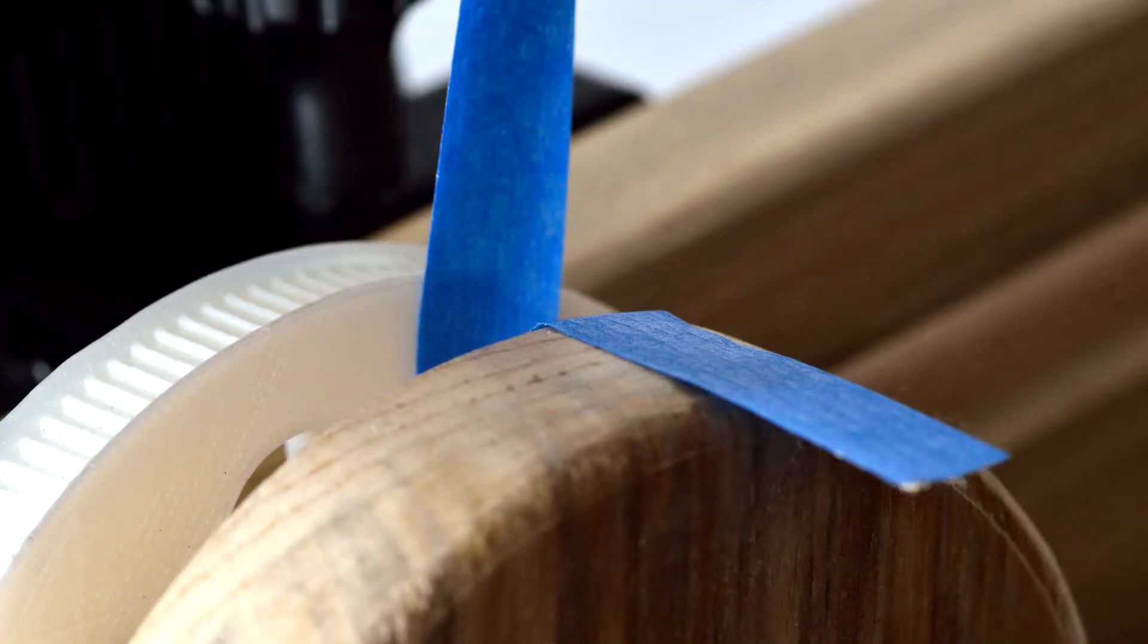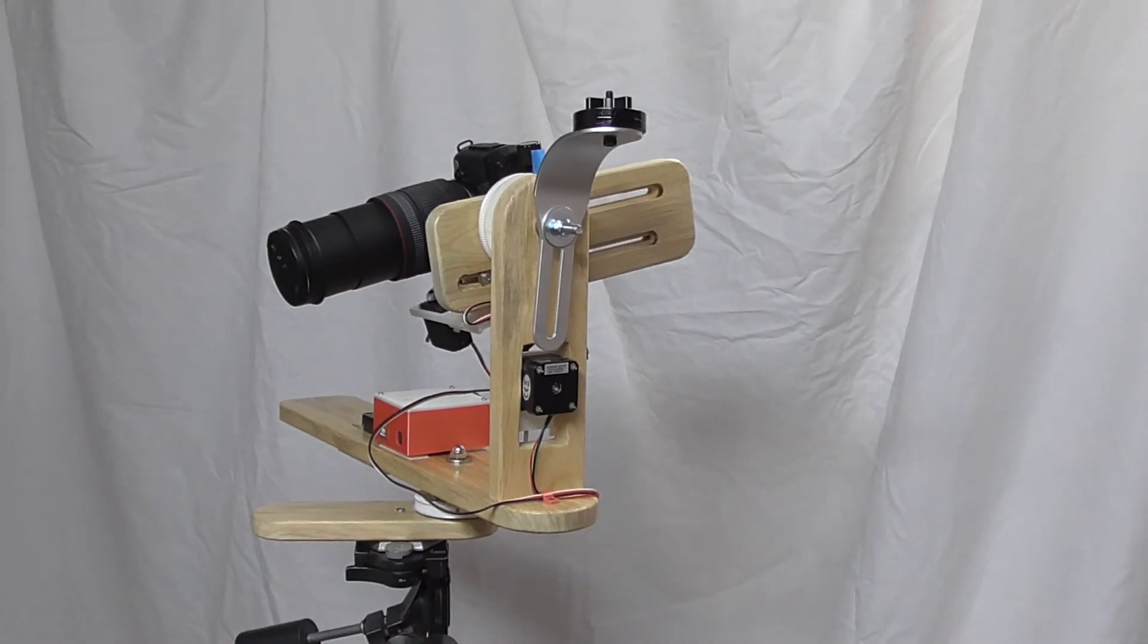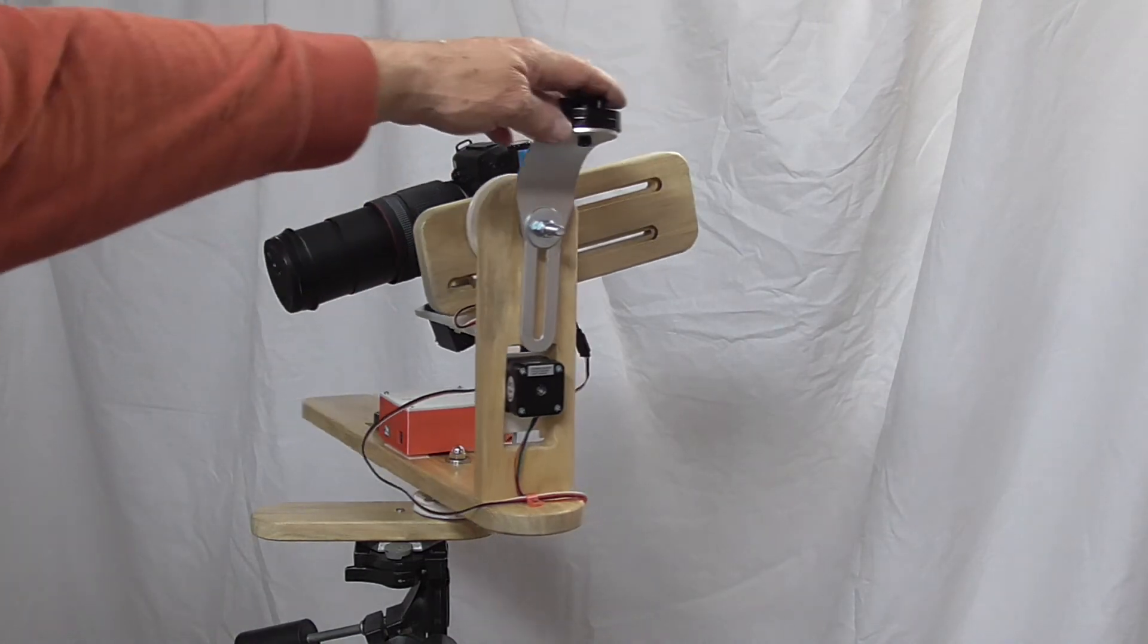Put some tape on the large pulley and opposite that, tape on the vertical support. Now add the counterbalance. With the tapes aligned, the counterbalance should point vertically.